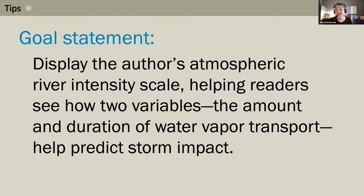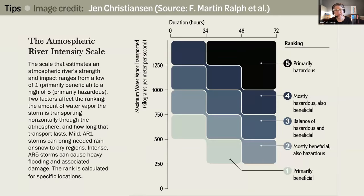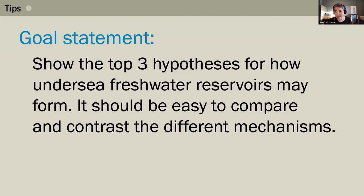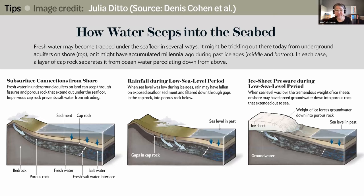Here's another goal statement: 'Display the author's atmospheric river intensity scale, helping readers see how the two variables — amount and duration of water vapor transport — help predict storm impact.' The resulting graphic has duration on the x-axis, amount of water vapor on the y-axis, with storm categories marked on the right side in color-coded blocks from hazardous level five at the top to beneficial level one at the bottom. Another goal: 'Show the top three hypotheses for how undersea freshwater reservoirs may form; it should be easy to compare and contrast the different mechanisms.' Artist Julia Ditto kept the cutaway perspectives the same in all three, with thick light-blue arrows showing the path of fresh water into the reservoir in each.